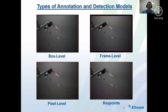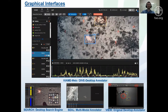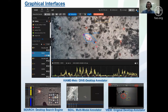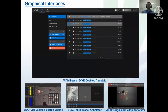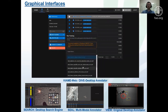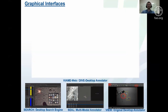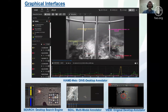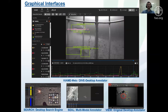Each annotation type is useful in different circumstances depending on the application and user time available. We have now developed a couple of different interfaces. The newest, DIVE, can be run either on the web or on desktop. DIVE supports multiple types of annotation in addition to model training on multiple sequences, and we now have a web version hosted online at viame.kitware.com that contains a couple million annotations. There are additionally some more specialized desktop applications, including search for rapid model generation, SEAL for multimodal annotations such as infrared and thermal simultaneously, and project folders for bulk processing data from batch scripts outside of interfaces.